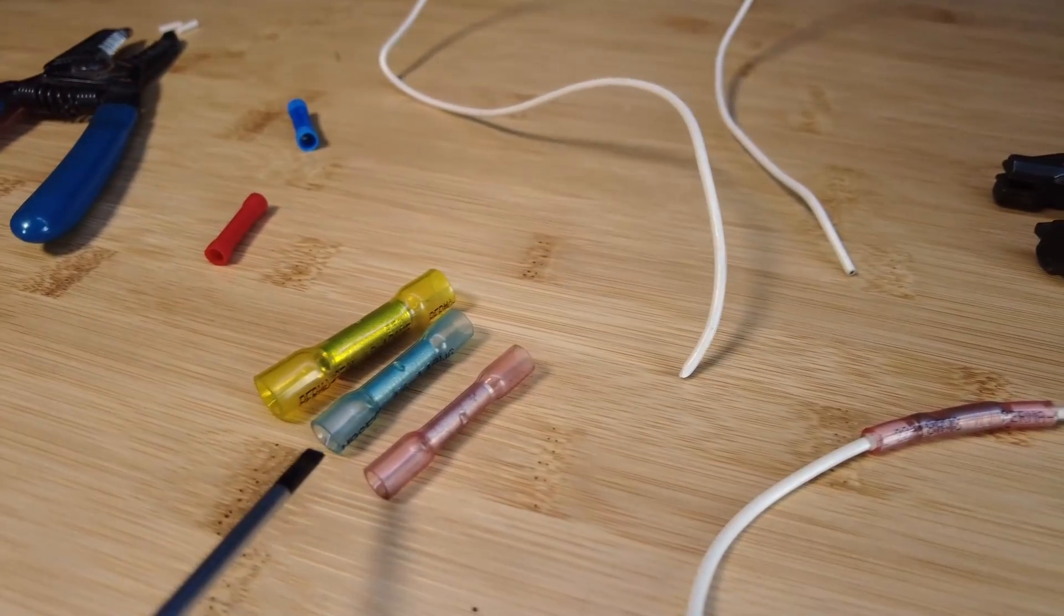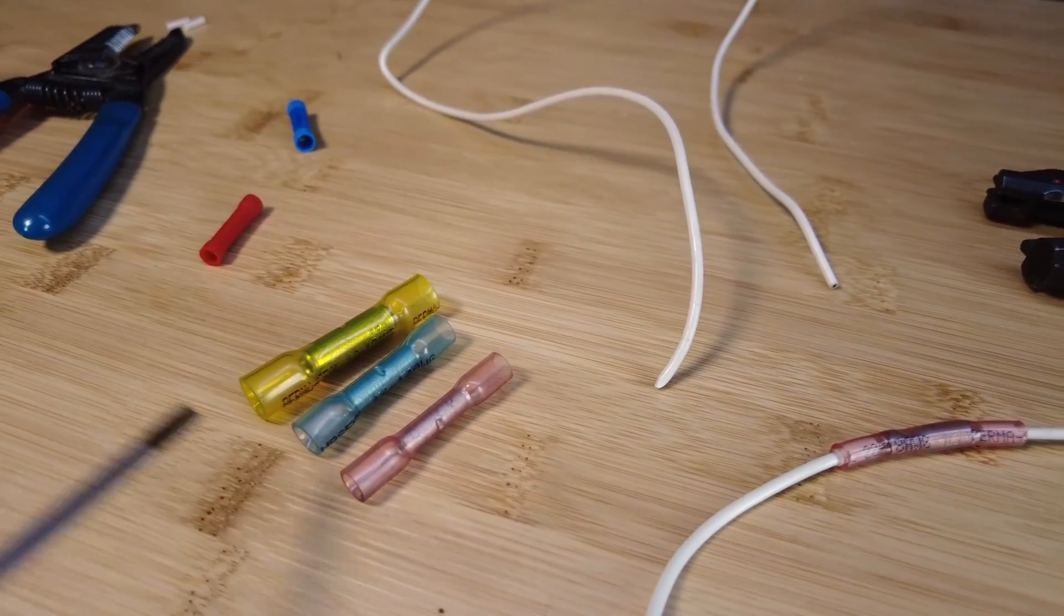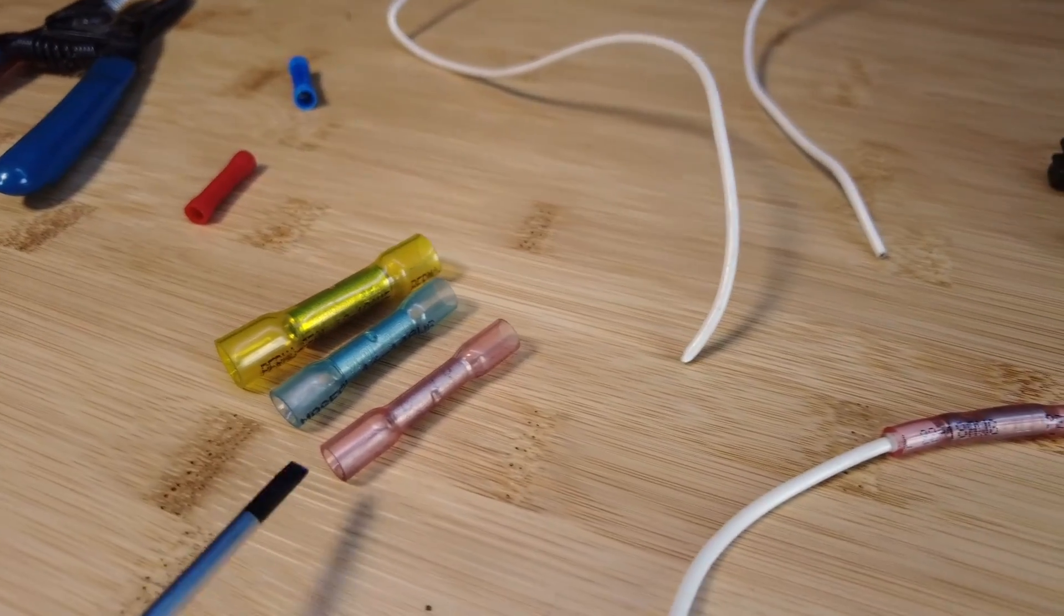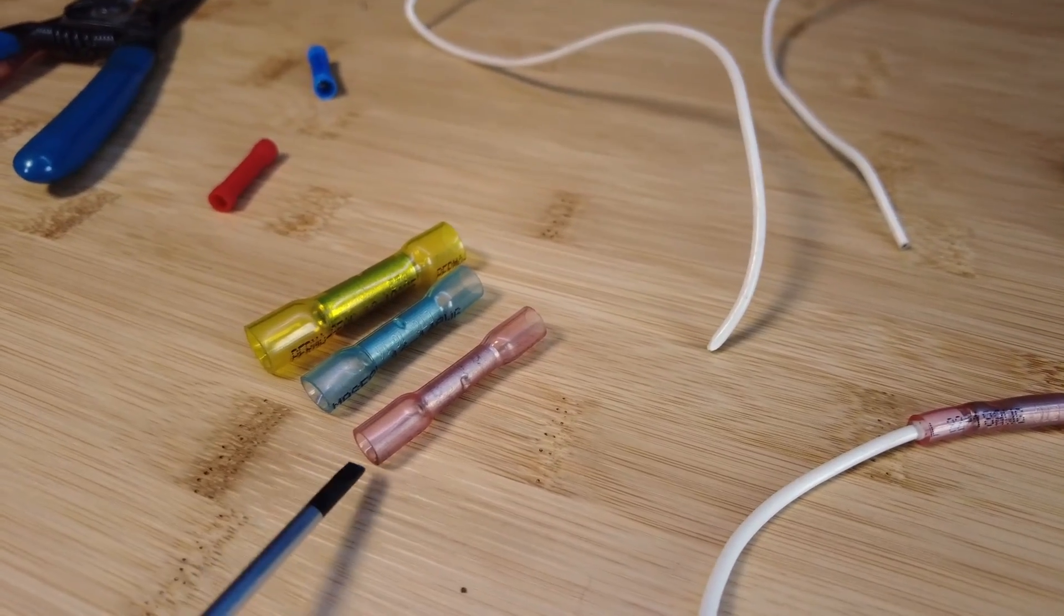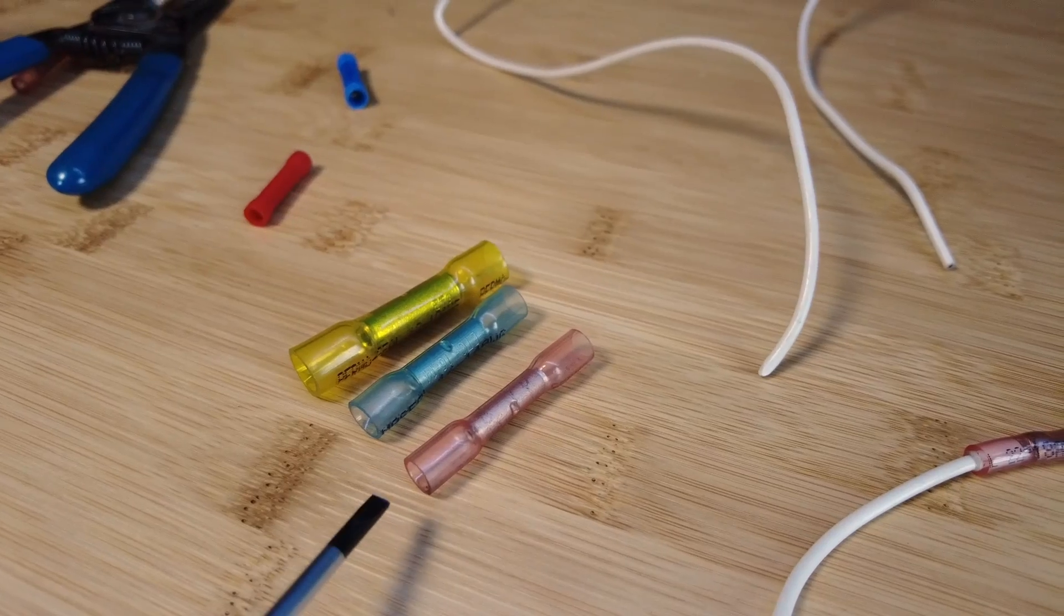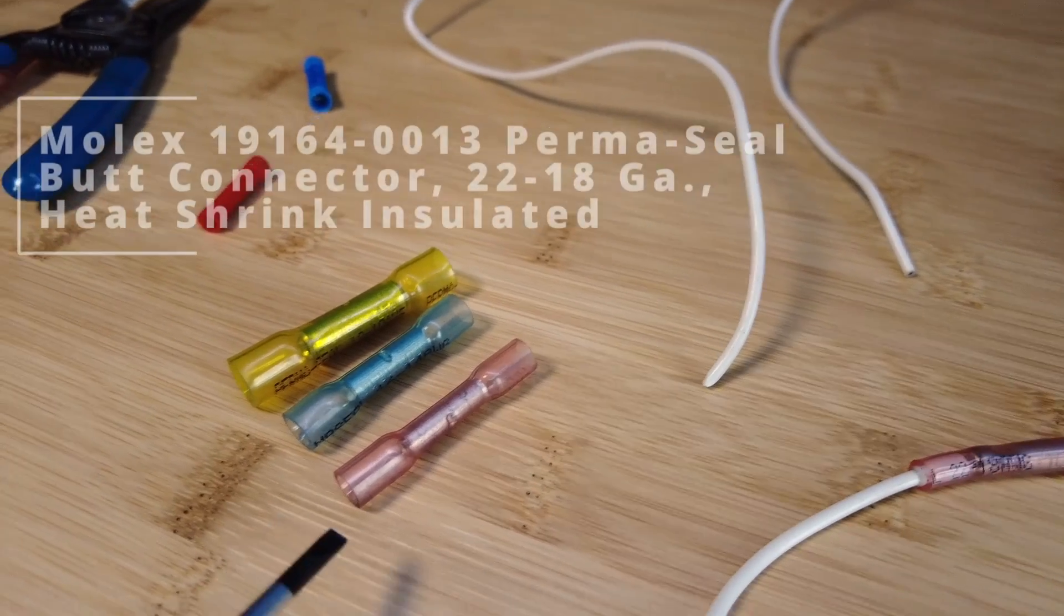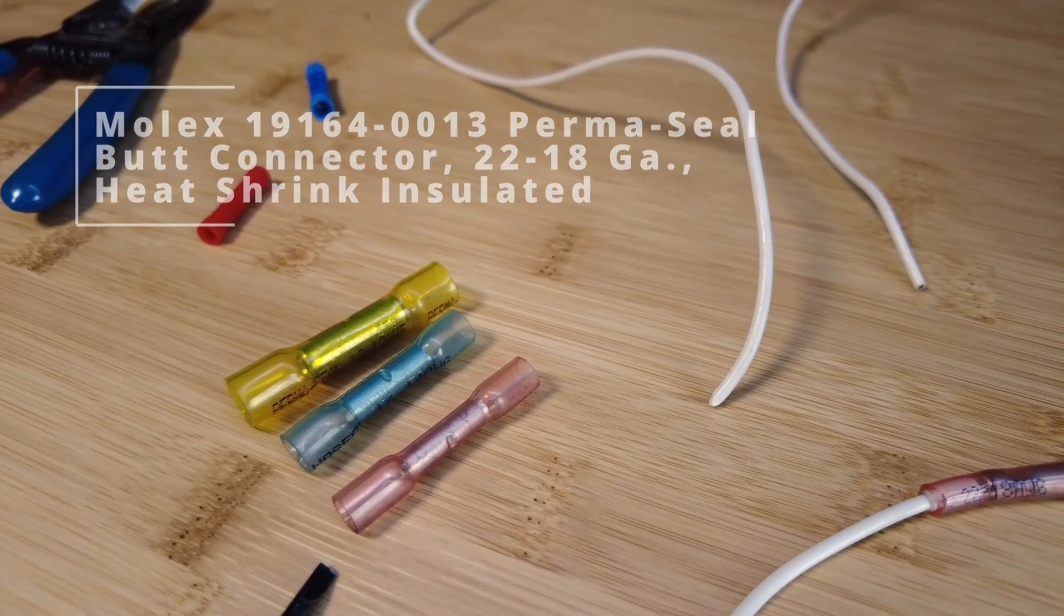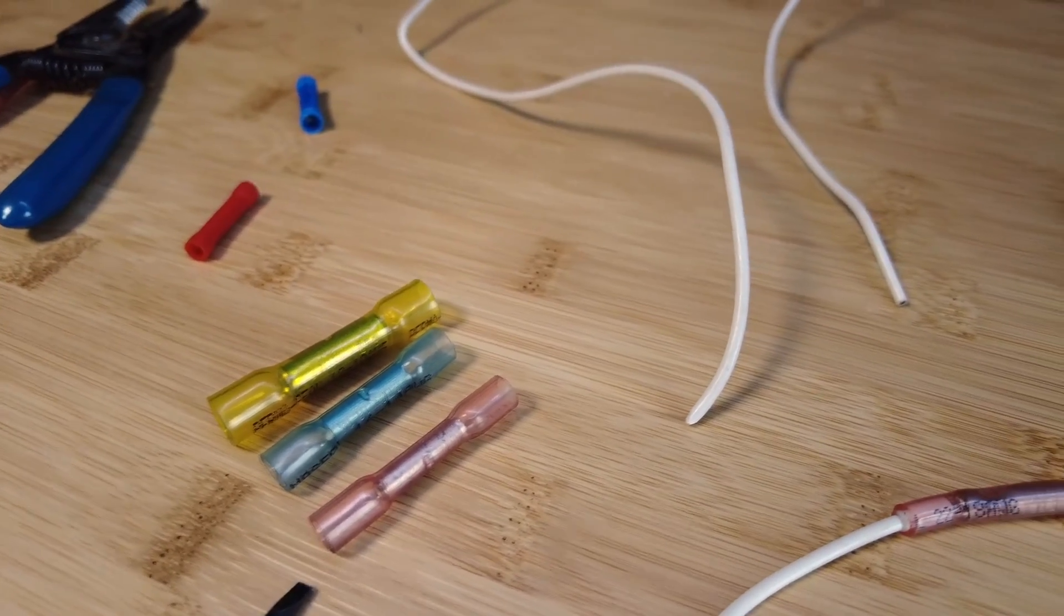And these are called, logically, butt connectors. There are different types of connectors, and we'll review those in a minute, but we're going to be using these adhesive-lined heat shrink connectors made by a company called Molex. They're kind of the high-end connector, and this is what we use on all our emergency vehicles that come through our shop.